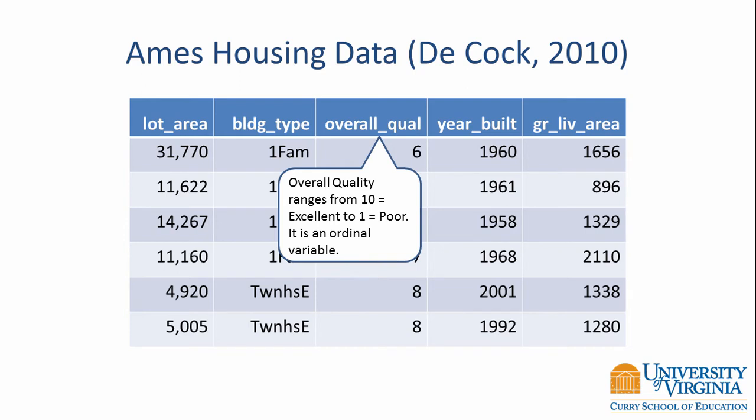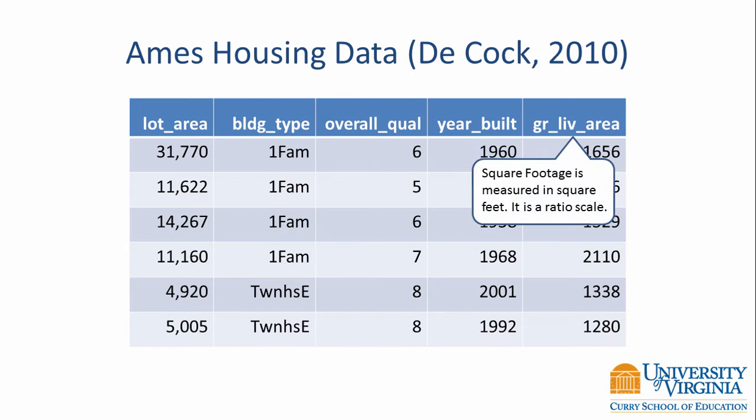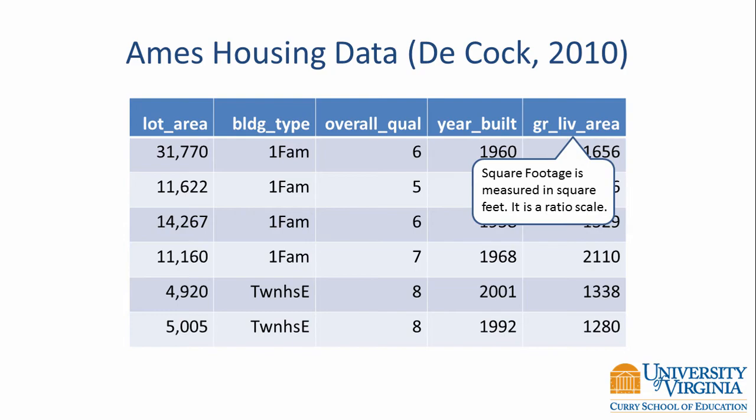Next, we have the year the house was built, and this is also an ordinal variable. Finally, we have the square footage of the dwelling. Square footage is measured in square feet; therefore it too is a ratio scale, just like lot area.